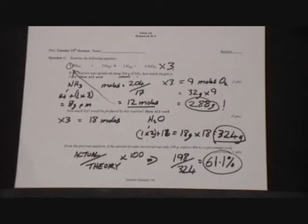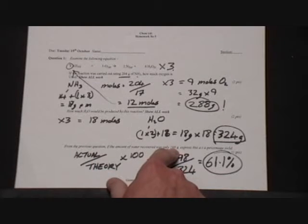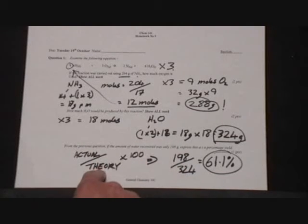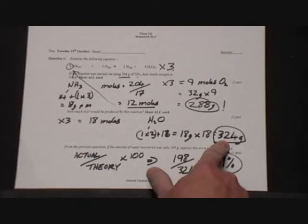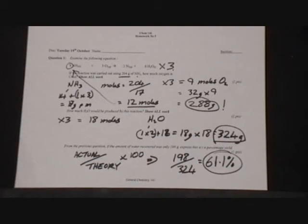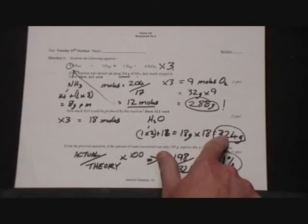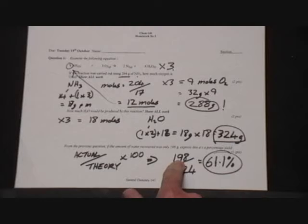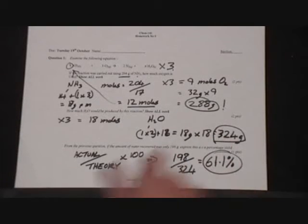Then for the percentage yield of water, we take the actual recovery of water, 198, divided by the theoretical amount, which we just calculated was 324. So actual divided by the theoretical times 100. 198 divided by 324 times 100 comes to 61.1%. So we've recovered 61% of the water, 198 grams is 61% of the water.